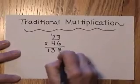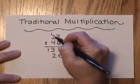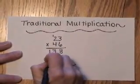Then you would put the 0 down here, and you would say 4 times 3 is 12, carry the 1, 4 times 2 is 8, plus 1 is 9,